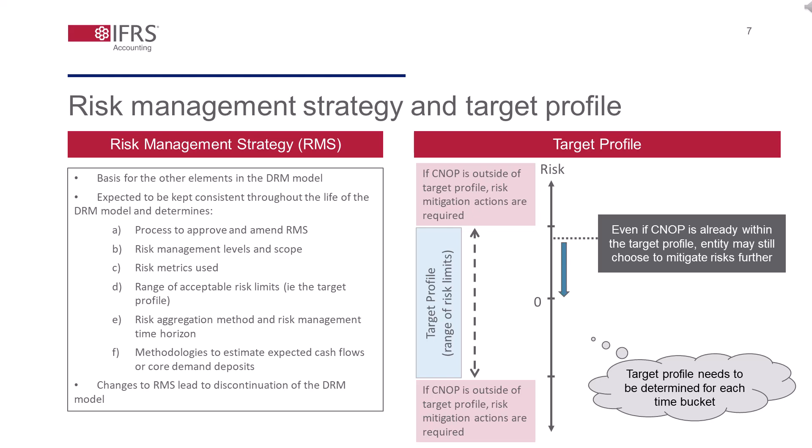We expect the risk management strategy would typically include the following elements. A: authority to approve or change risk management strategy — this covers how the risk management strategy shall be determined at the initial application of the DRM model and changed over time if needed. B: risk management levels, that is the entity level at which interest rate risk is managed, which is particularly relevant for a group entity. C: risk metrics chosen for assessing interest rate risk — an entity is expected to specify and document how it would monitor and manage interest rate risk.